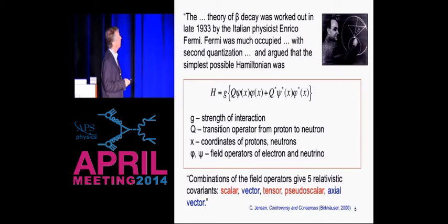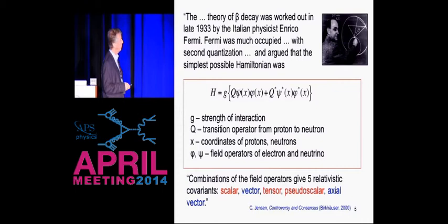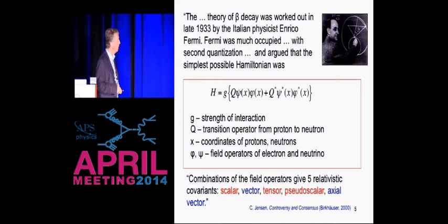Fermi had been working on electromagnetic radiation at the time, and he was very fascinated by second quantization. He argued that the simplest possible Hamiltonian is what's shown there. There's some constant which is just the strength of the interaction. There's an operator Q which turns a proton to a neutron, or vice versa. And then there are two field operators that create the electron and the neutrino at the position of the nucleon. As he pointed out in this paper, combinations of the field operators give five relativistic covariants: scalar, vector, tensor, pseudoscalar, and axial vector.